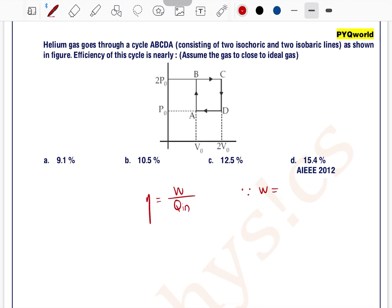W is work and for a cyclic process work is the area enclosed by the curve. So area enclosed by the curve can be written as V₀ into P₀.